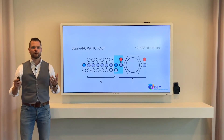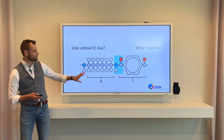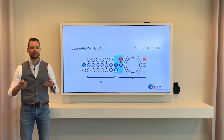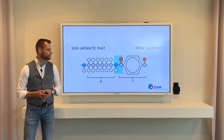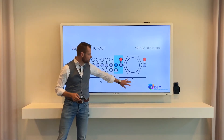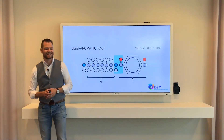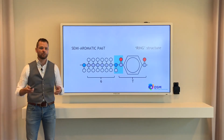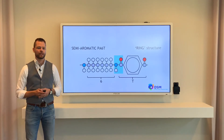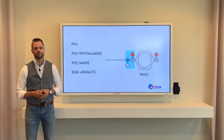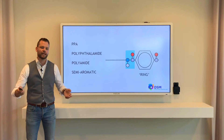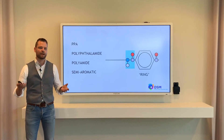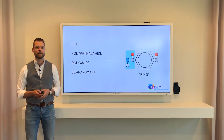But what if you change part of that chemistry? What if you build in a ring structure? Then you make a semi-aromatic polyamide. You see here the terephthalate, which is abbreviated as T. So you build in a ring structure. To recap: a PPA is a polyphthalamide. It is part of the polyamide family and is called a semi-aromatic polymer because of that ring structure.